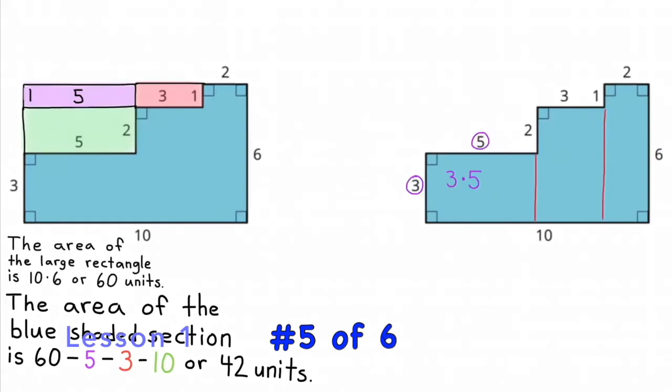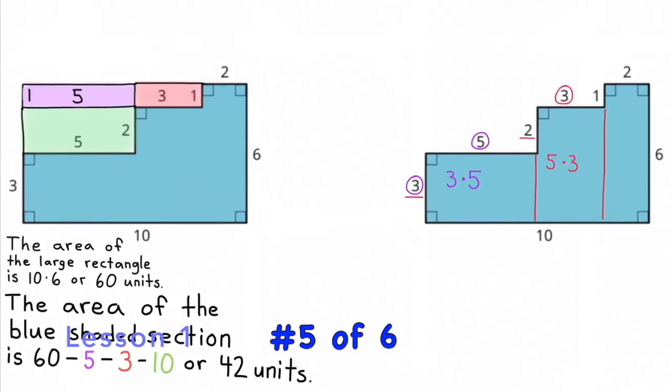Now I've broken down the shape into three quadrilaterals. The quadrilateral on the left has the dimensions of 3 times 5, the quadrilateral in the middle has dimensions of 5 times 3, and the quadrilateral on the right hand side has the dimensions of 2 times 6.